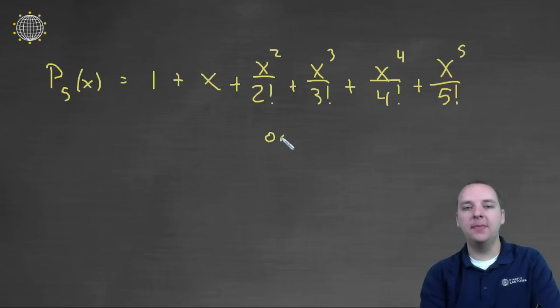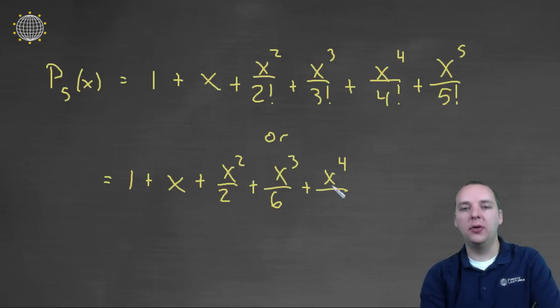Or if you prefer to not see those factorials all over the place, you can say one plus x, plus x squared over two, plus x cubed over six, that's three factorial, plus x to the fourth over four factorial is twenty-four, and x to the fifth over five factorial, which is a hundred and twenty, okay.